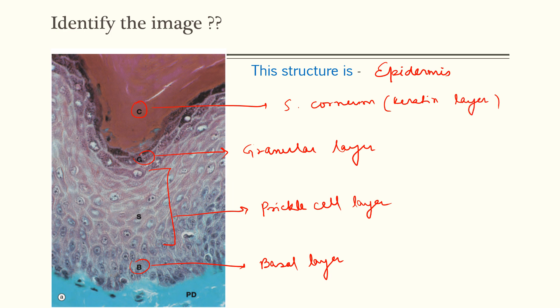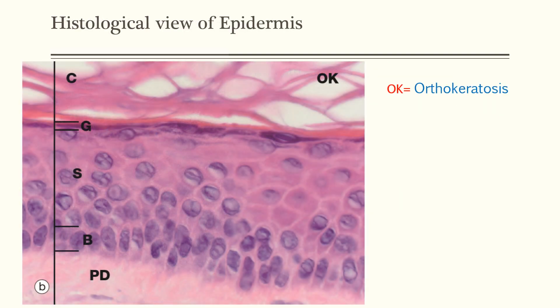So the prickle cell layer forms the majority of the epidermis. Let's have a closer look. You can see the basal cell layer, the spinosum layer, the granular layer, and the corneum layer.